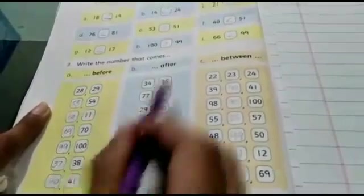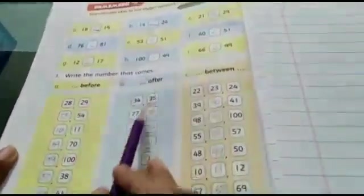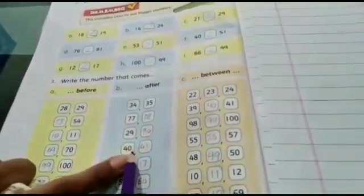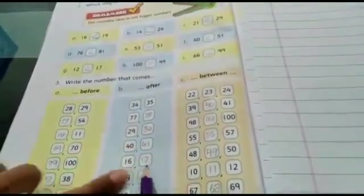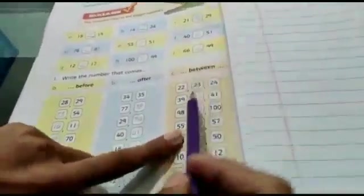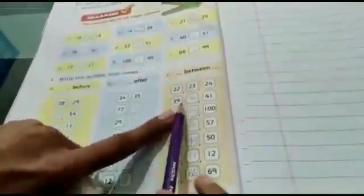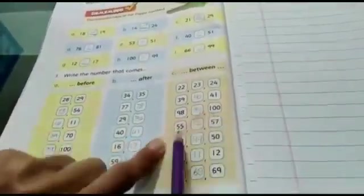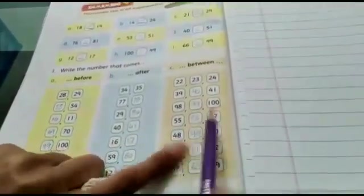Now after means what comes next: 77, 78. 29, 30. 40, 41. 60, 61. 59, 60. 12, 13. And between means what comes in the middle of numbers: 39, 40, 41. 98, 99, 100. 55, 56, 57. 48, 49, 50. 10, 11, 12. 67, 68, 69. OK students, this is all from today's lecture. Thank you.